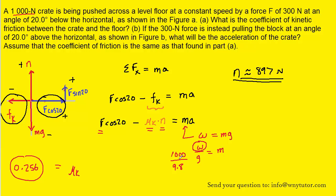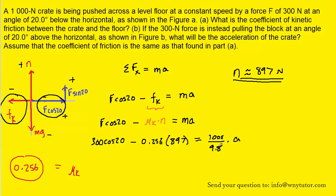Let's fill in all the known values. You can simplify the left side on your calculator, and when you solve for a, you should end up with approximately 0.51 meters per second squared. That is the acceleration for part B.